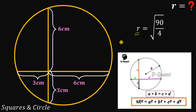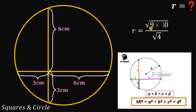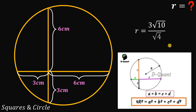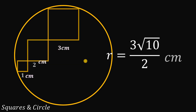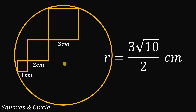We take the positive value for r since it is a length. Simplifying the square root of ninety over four: we write it as square root of ninety over square root of four. Since ninety equals nine times ten and nine is a perfect square, the numerator becomes three times square root of ten, and the denominator is two. Therefore, the radius of the circle is three times square root of ten, all over two centimeters.